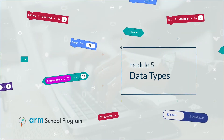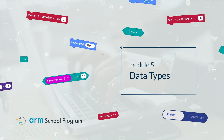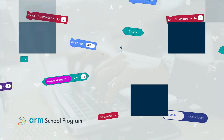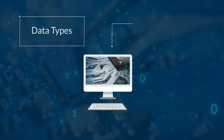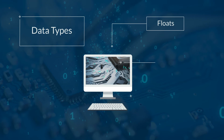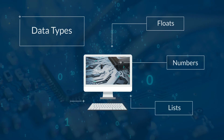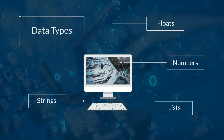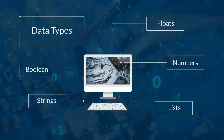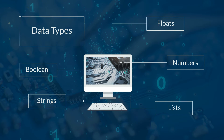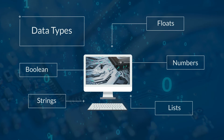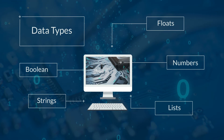Module 5: Data Types. Computer programs sometimes need to store data. You need to tell the computer what type of data you are storing so the program knows what it can and can't do with it.